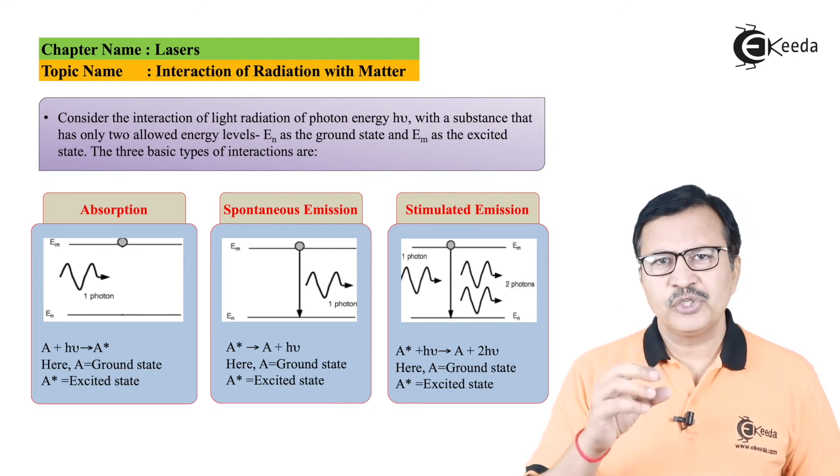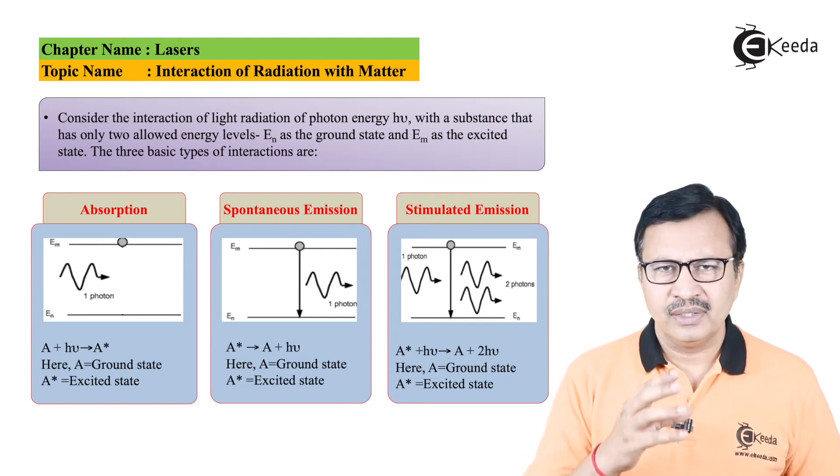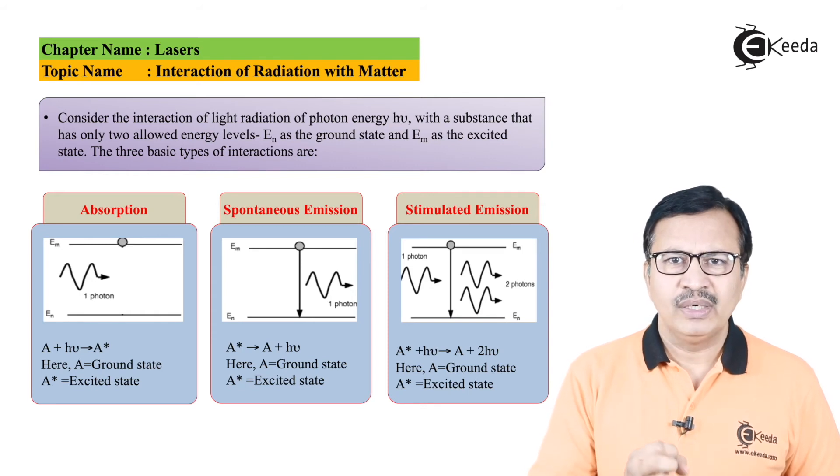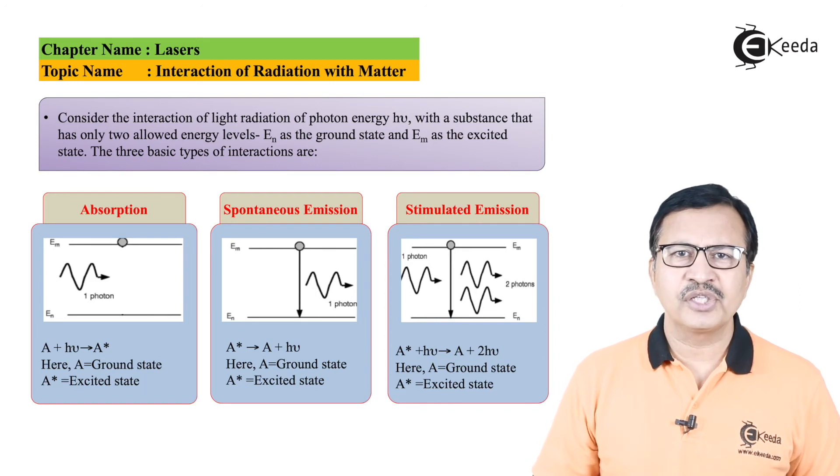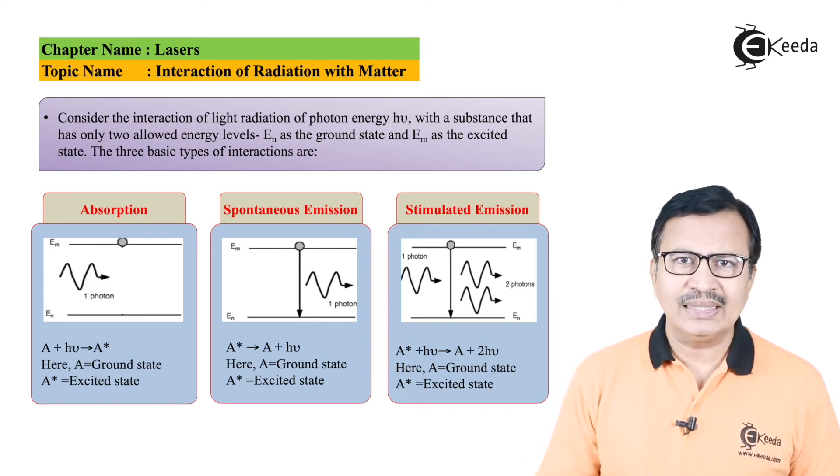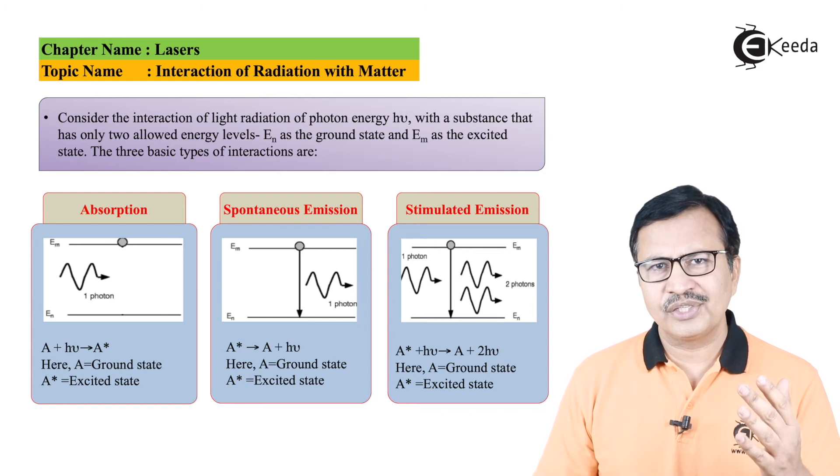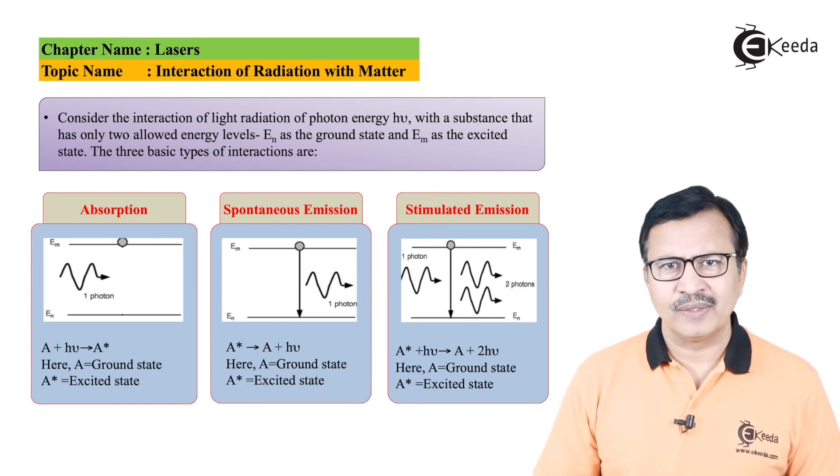This atom which is present in the excited state will absorb temporarily a photon of energy hν and will get stimulated to make a transition from the higher energy level to the lower energy level. So when it makes a transition, it will have its own photon.